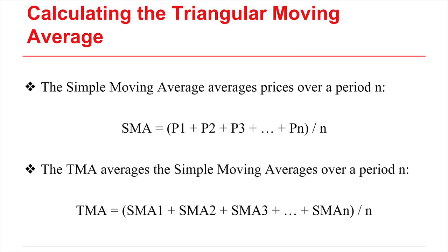Calculating the triangular moving average is pretty simple — it's basically two steps. First, you find the simple moving average over your selected period n, which involves adding the prices together and dividing by the number of prices. These simple moving averages are then themselves averaged by adding them all together over a period n and dividing the sum by n. These two averaging steps are basically what give us the smoothness of the TMA's line.